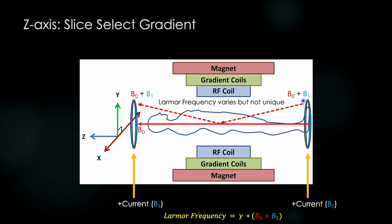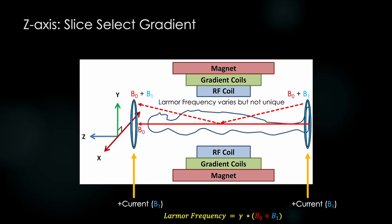This point here shares the same frequency as this point here. And therefore, this point will have the same Larmor frequency as this point. So if we tuned our RF pulse to this point, we would excite this slice, but also excite this slice. So better, but still not helpful.